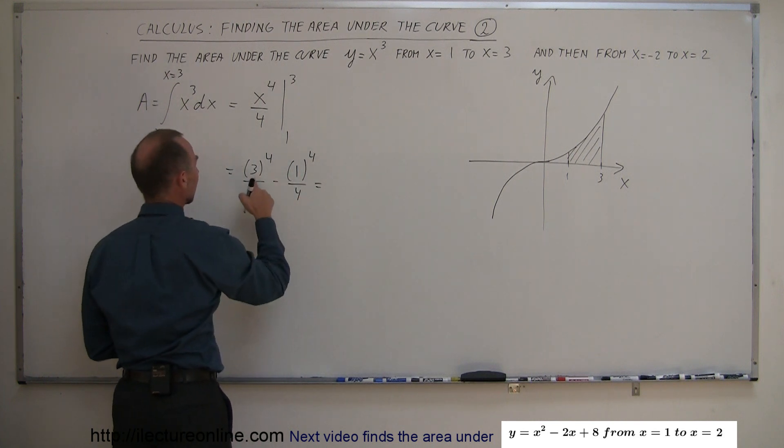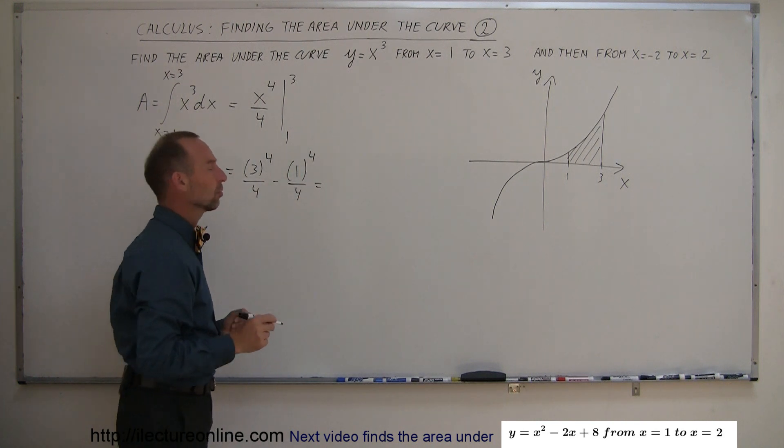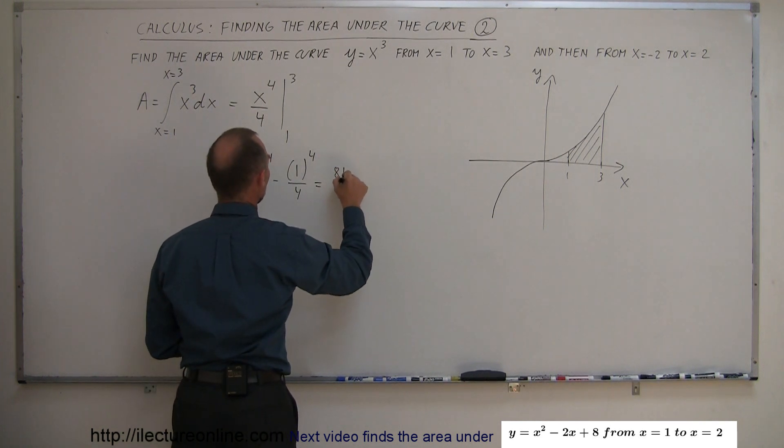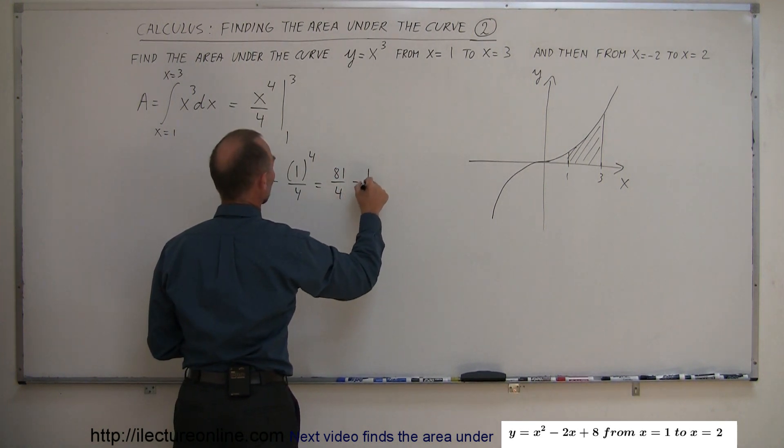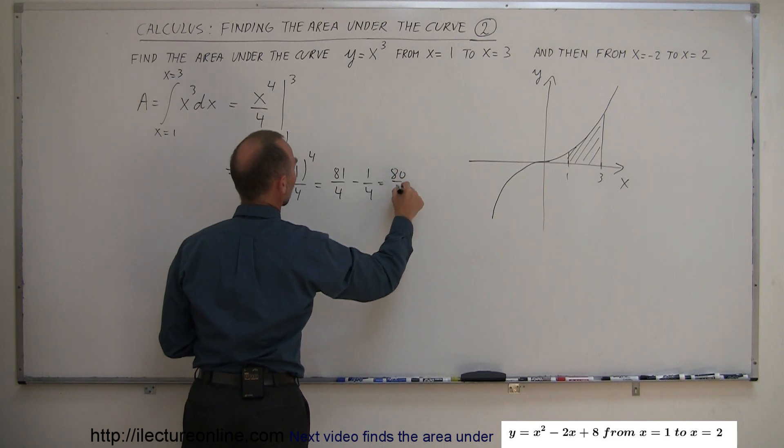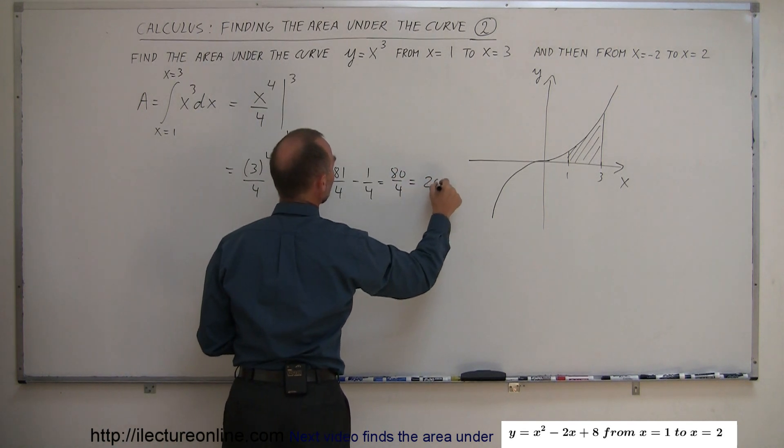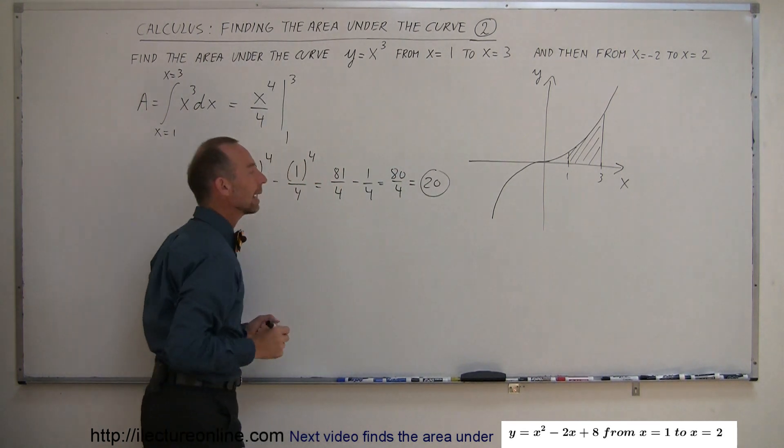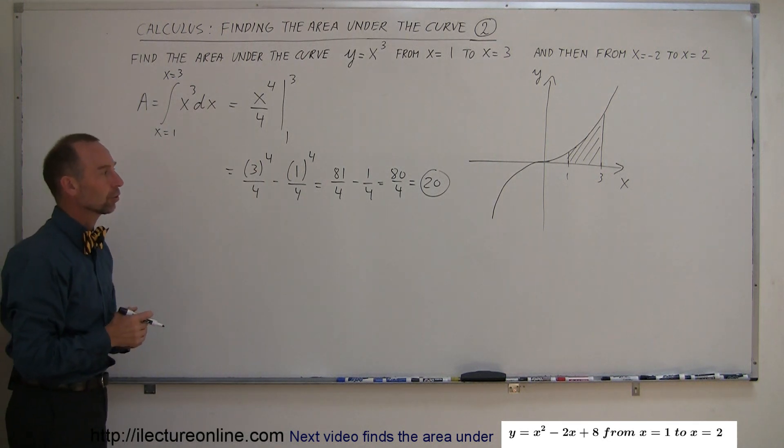That's equal to 3 to the 4th power, which is 81, so that's 81 over 4 minus 1 over 4, which is 80 over 4, which is equal to 20. So 20 would be the area underneath the curve for that function from x equals 1 to x equals 3.